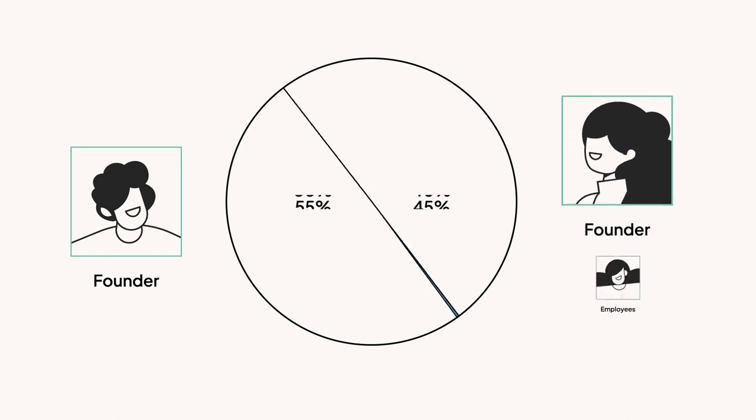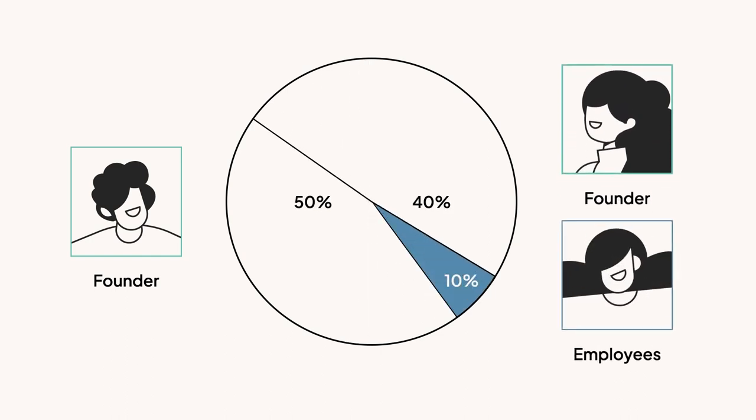Founders can also reserve additional shares to give out to employees. These typically come in the form of stock options, which give employees the right to purchase shares of the company at a future date. We'll talk a lot more about employee ownership plans and stock options in the next video, but for now just file options away in your mind, and let's move on to share type number two: preferred shares.